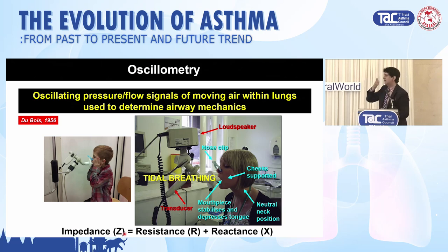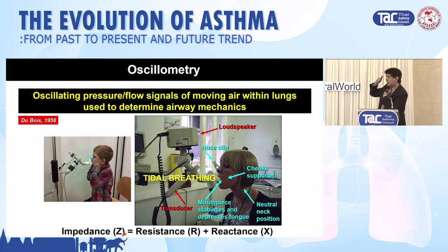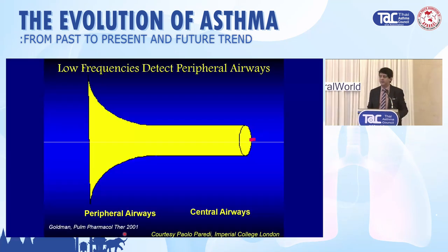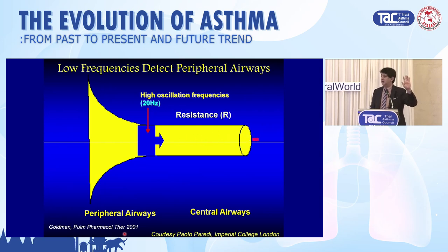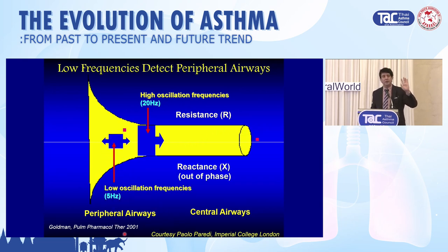Now imagine you have a submarine-like transducer at the mouth sending frequency waves into the airways — these get reflected. You can work out whether the obstruction is in the large airways or small airways based on the frequency of your pulse. When you have high frequencies of 20 hertz at the mouth, you get an assessment of the large airways.